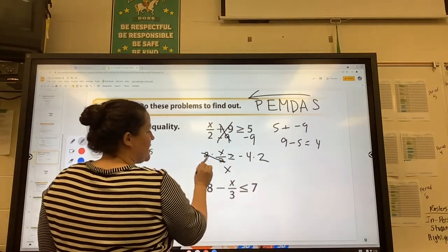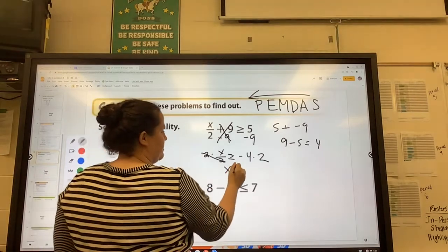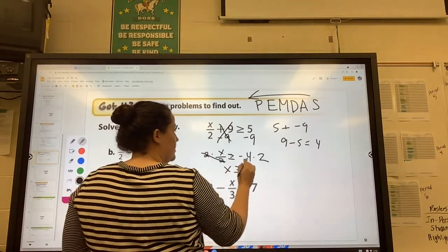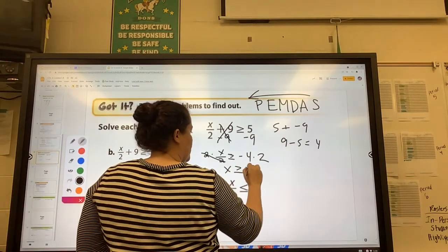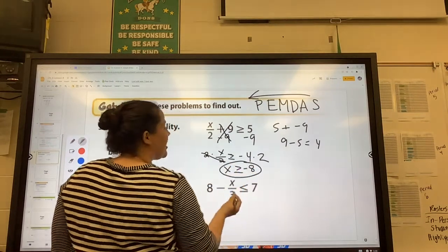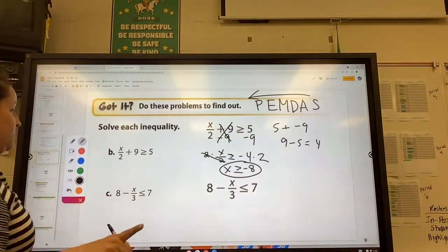The 2's cancel, x. And since we didn't multiply by a negative, we still keep it. It's greater than or equal to. 4 times 2 is 8, but negative. So we never change the sign because we never divided or multiplied by a negative number.